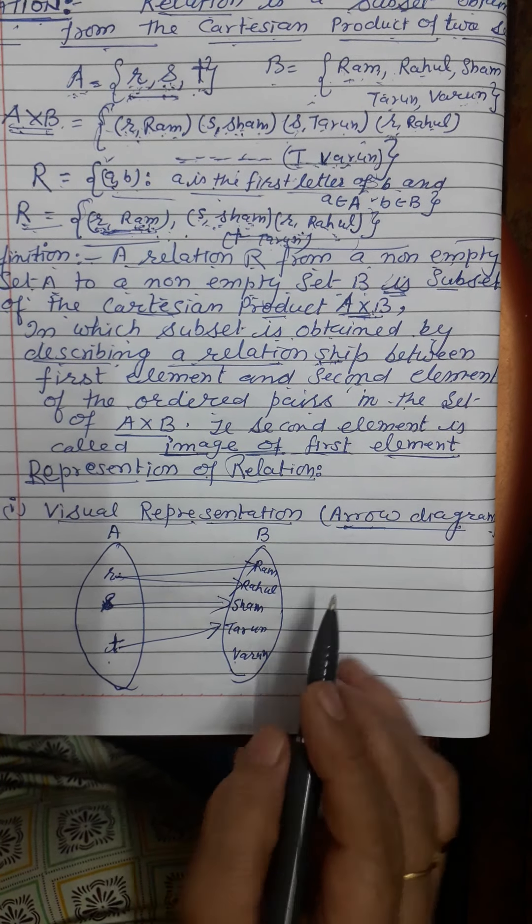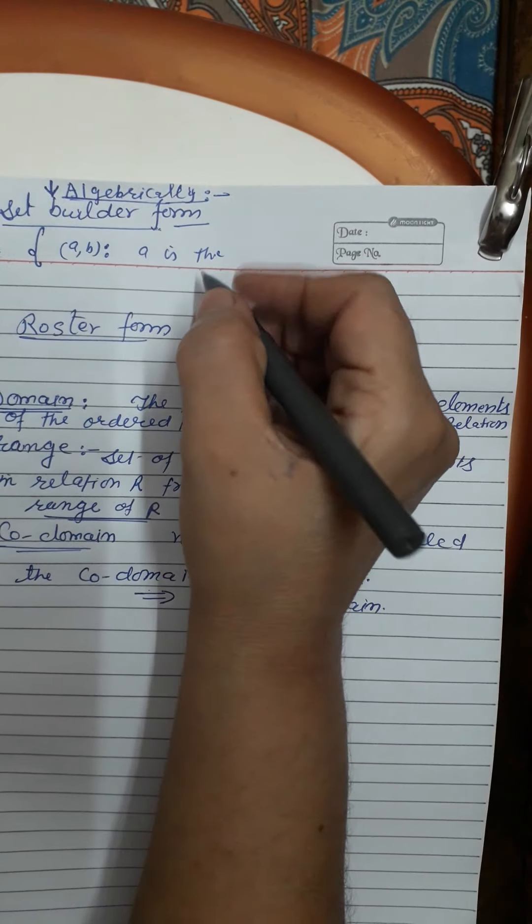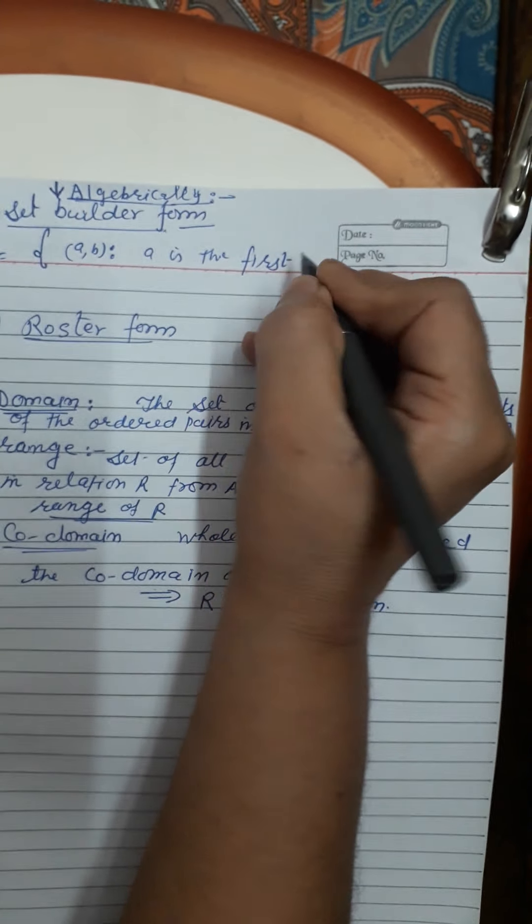The next method is set builder form. In set builder form: R = {(A, B) : A is the first letter of B, A belongs to set A and B belongs to set B}.